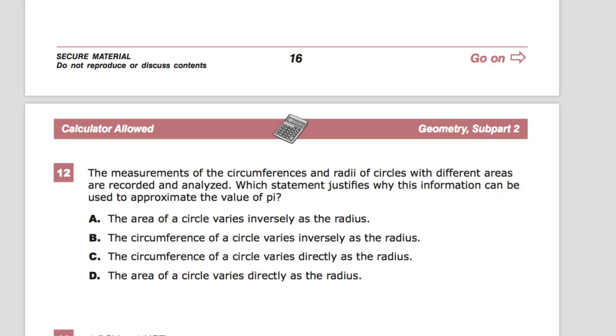So essentially it's saying we have different areas available to us, or circles with different areas I should say, and then we're going to look at their circumference and then their radii and see if we can get a feel for what happens.